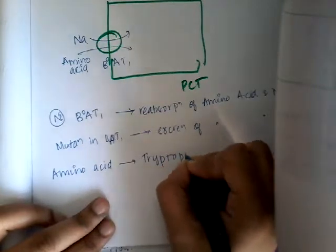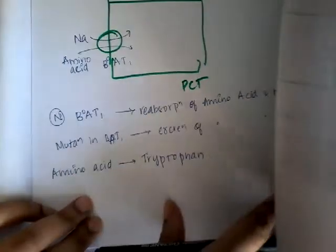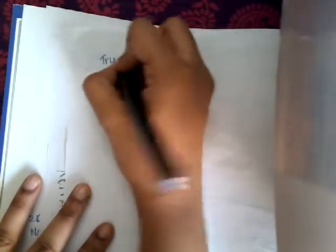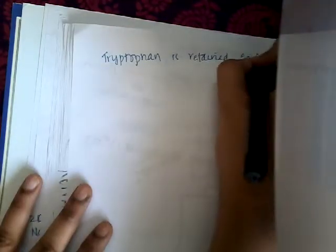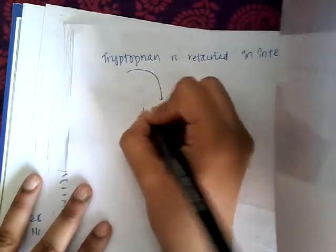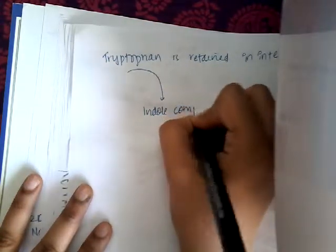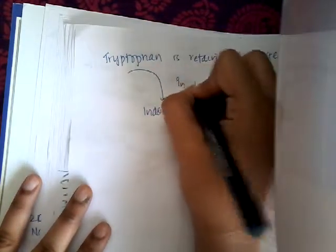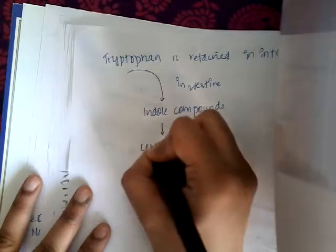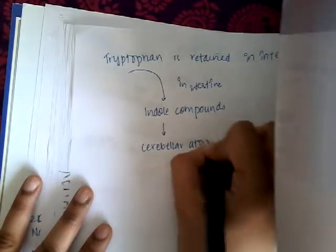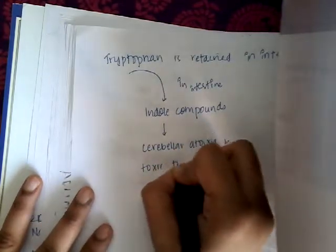The main amino acid involved is tryptophan. Because there is no absorption of tryptophan, it is retained in the intestine and converted to indole compounds. These indole compounds are toxic to the CNS and cause cerebellar ataxia.